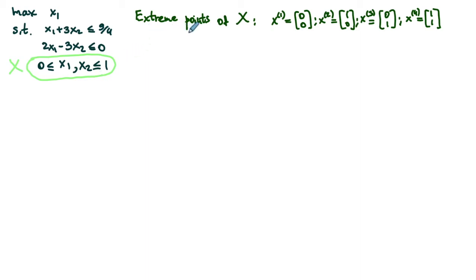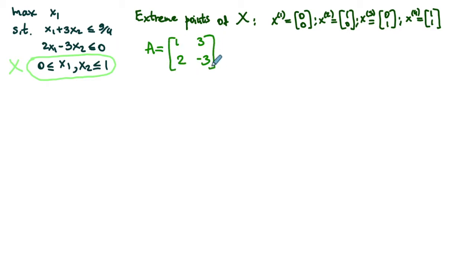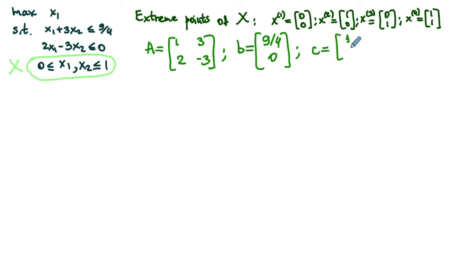Here we have the extreme points of X listed and we'll develop the Dantzig-Wolfe reformulation. Let A denote the matrix of coefficients on the left-hand side, so A is [[1,3],[2,−3]], and b is the vector of right-hand sides, which is [9/4, 0]. The vector of objective function coefficients c is given by [1, 0].